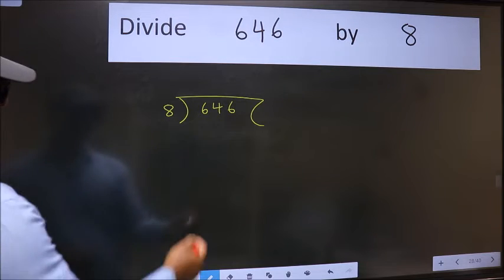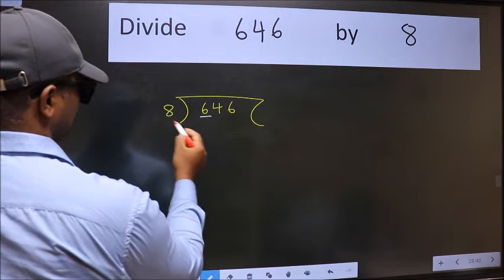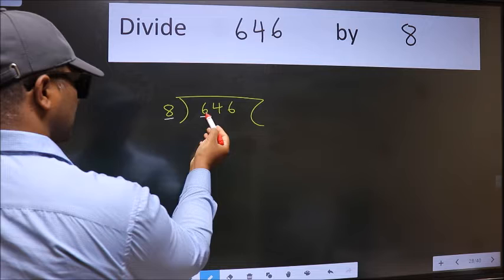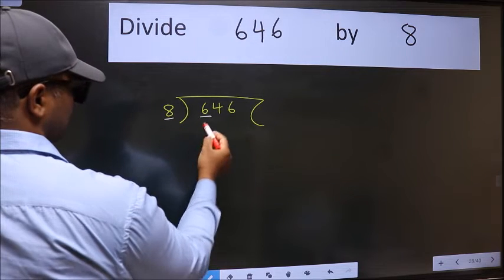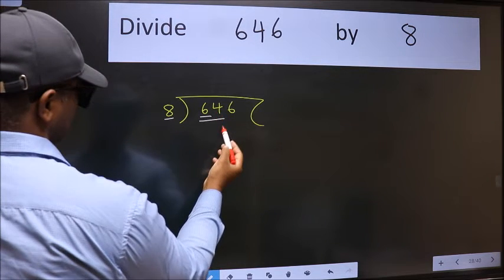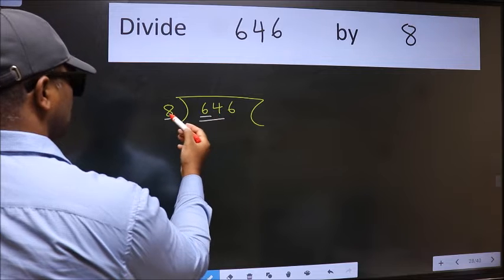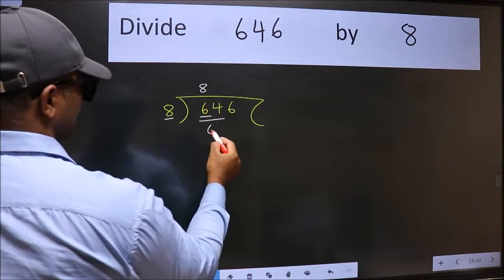Next. Here we have 6 and here 8. 6 is smaller than 8. So take two numbers, 64. When do we get 64 in 8 table? 8 8s, 64.